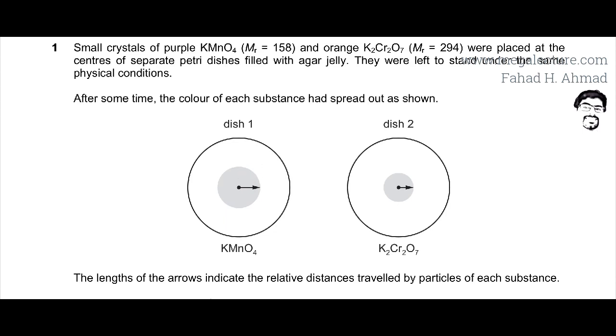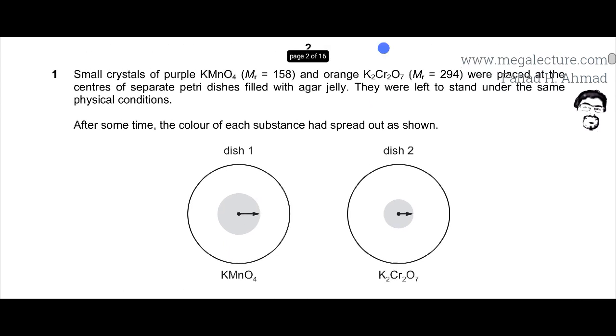Now the rule for diffusion is that particles that have a smaller mass, for example over here, if you look at these two molecules, you will notice that KMnO4 has a smaller mass. Smaller mass, lighter particles, they travel faster. So this dish with KMnO4 is diffusing faster. Its particles are moving randomly, haphazardly in different directions at a faster rate because it has a smaller MR.